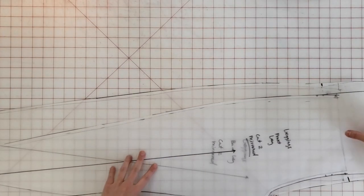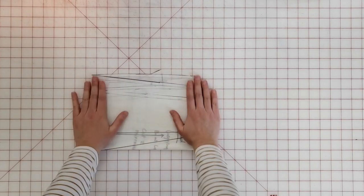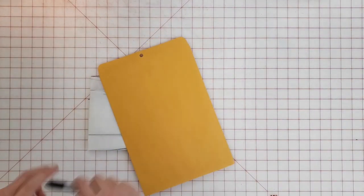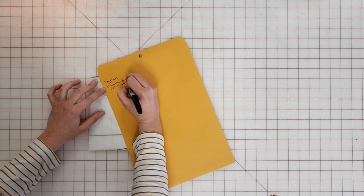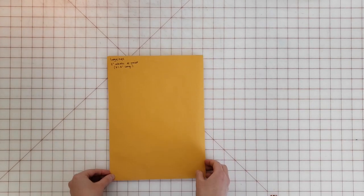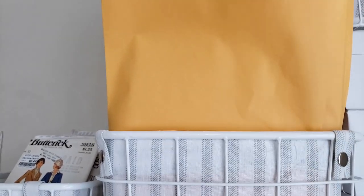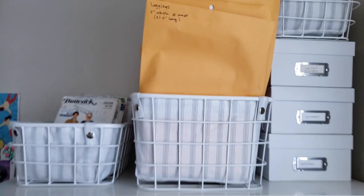That's basically it. Now I'm going to fold my pattern and put it away in a manila folder. This is how I store all of my paper patterns. I want to make sure I label it and put any kind of notes like the waistband elastic length on the outside of the package so I don't forget. Then I'll store it in my nice neat little pattern storage system and I'm done.